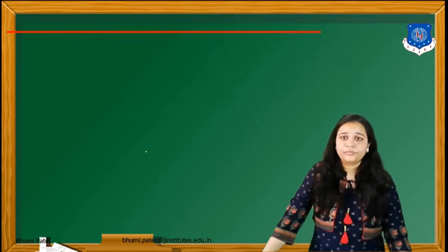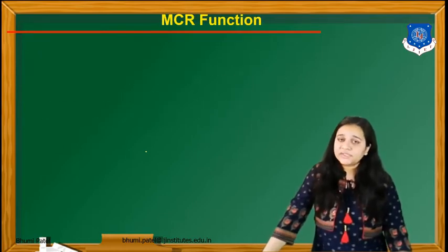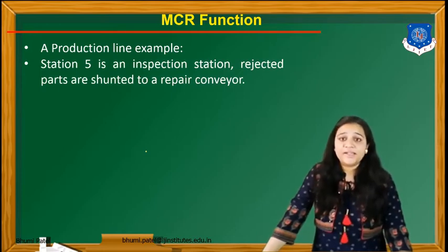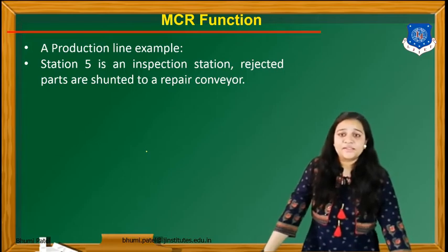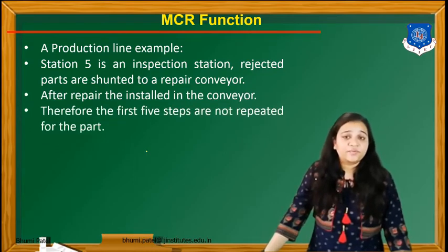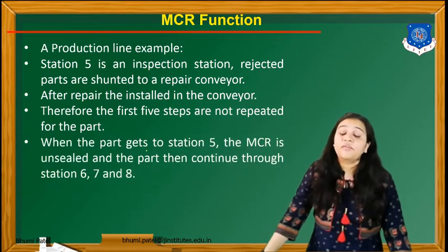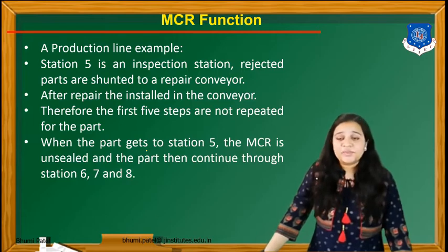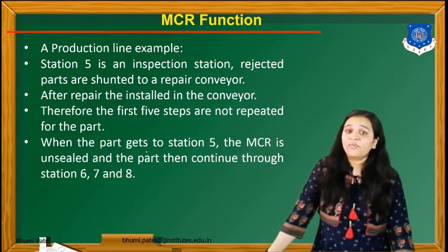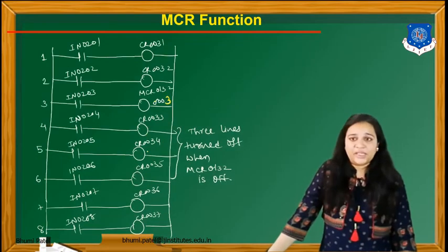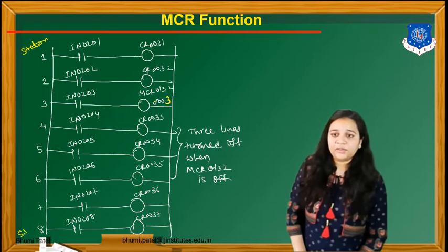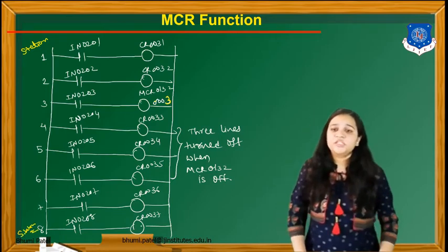The next instruction is the MCR function — the Master Control Relay. A production line example is given: station 5 is an inspection station. Rejected parts are sent to the repair conveyor, and after repair they are reinstalled on the conveyor. Therefore, the first 5 steps are not repeated for the part — the part gets to station number 5, the MCR is unsealed, and the part continues through stations 6, 7, and 8. The program starts from station number 1 and ends at station number 8, with station 5 being the inspection station.